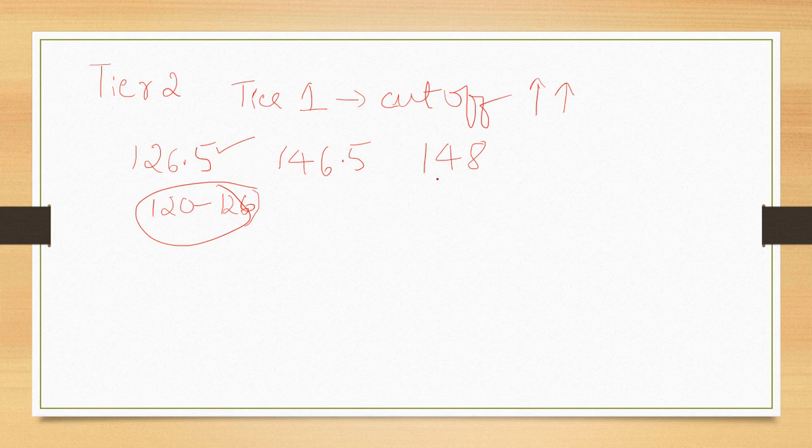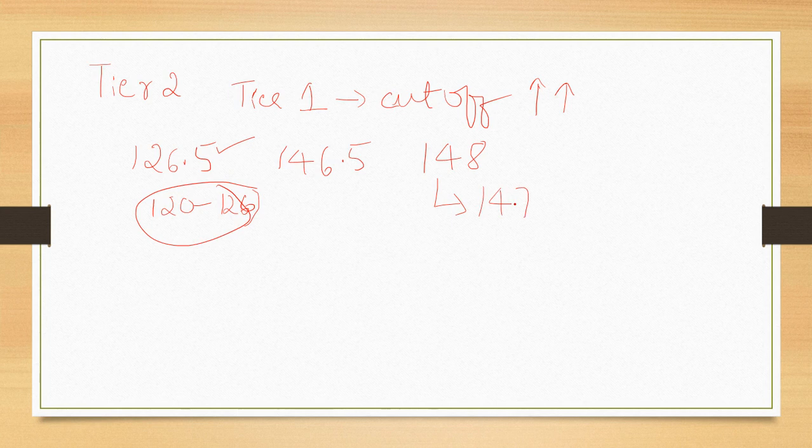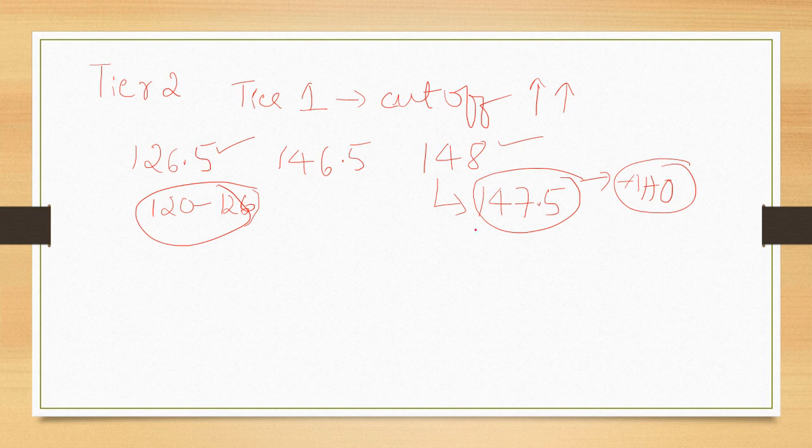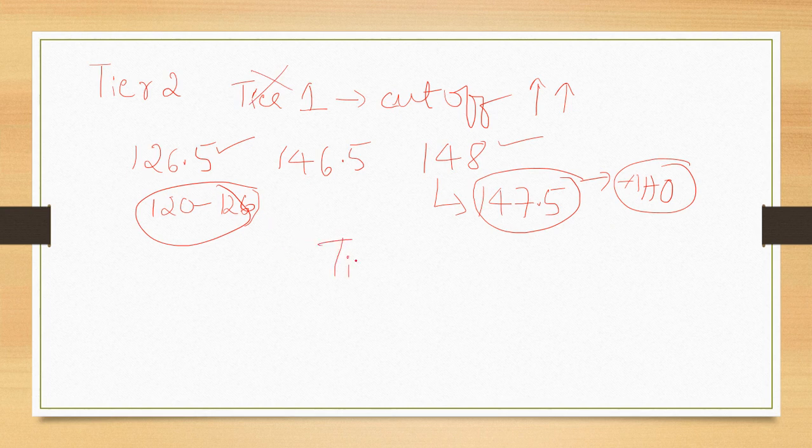My friend he had scored 147.5 marks but he was not able to write AAO paper because the cutoff was 148 but he was aspiring for AAO post. But unfortunately he couldn't write it because of only 0.5 marks difference. So these things will be happening if you don't scrap tier 1 exam then the people who didn't get selected for tier 2 will be at loss.